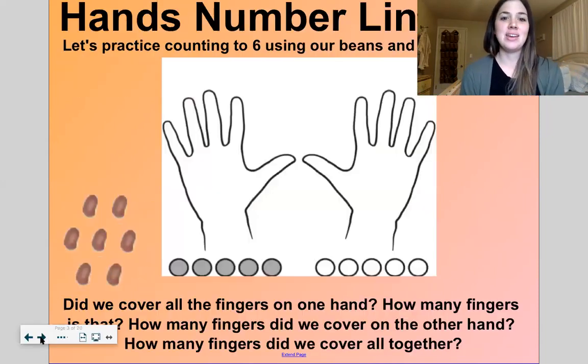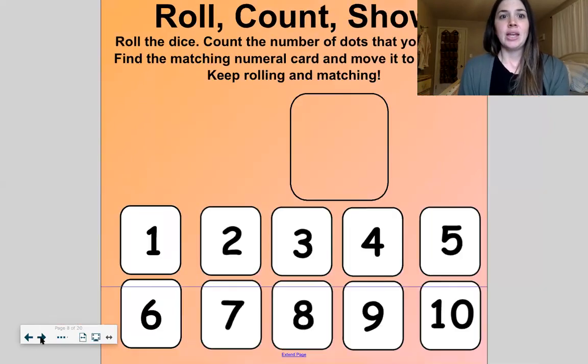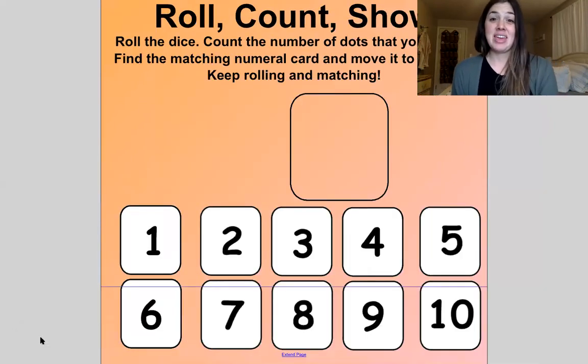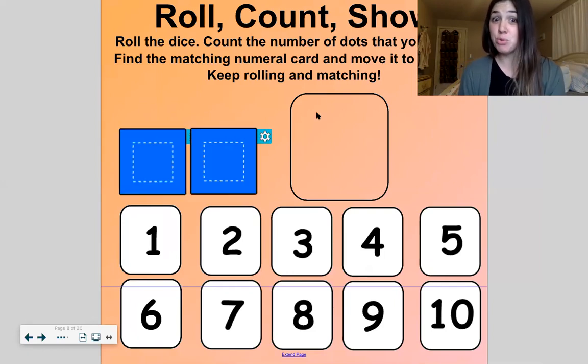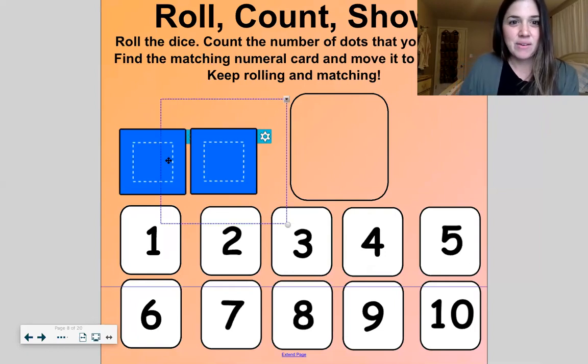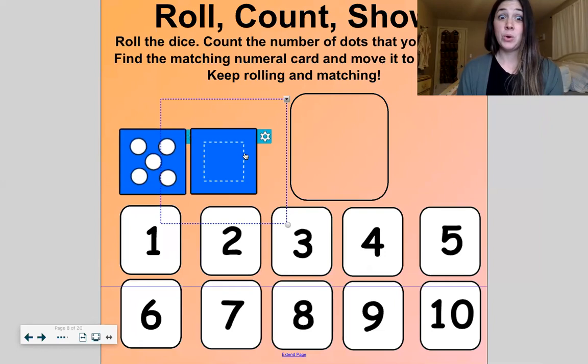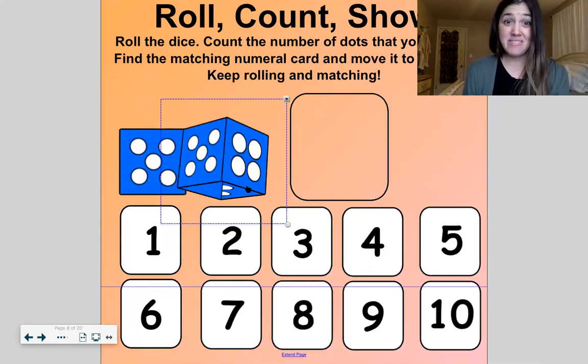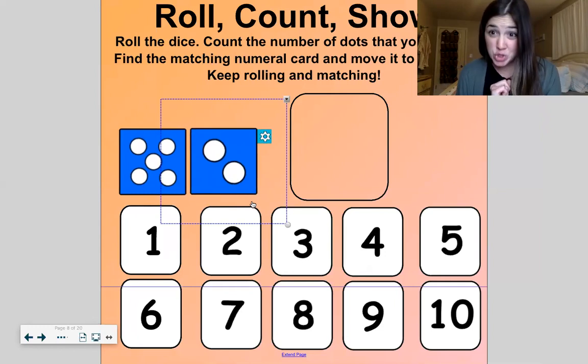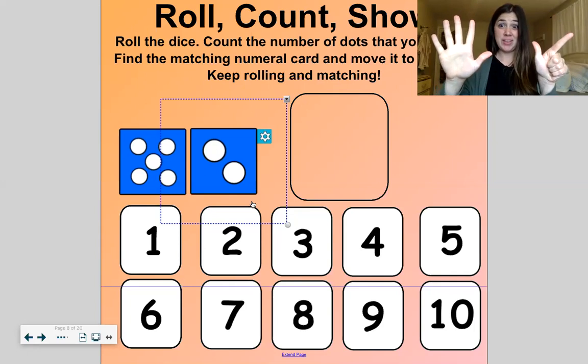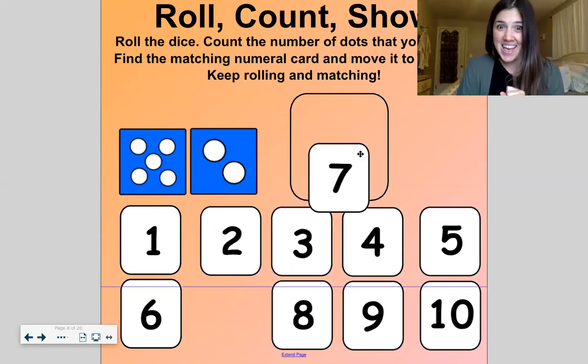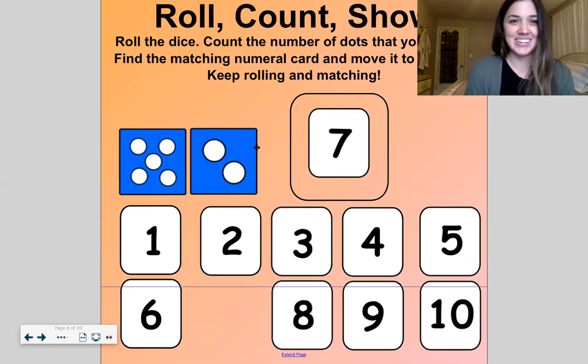Okay, here we go. Let's see, okay, this is a fun math game. It's called Roll the Dice and then we'll count the number of dots that we rolled and we'll find the matching number card and move it to the box. All right, I hope this works, it worked earlier. So if I click, oh, there we go. Ooh, so there are five there and two on that dice. Five and two is seven, yes.